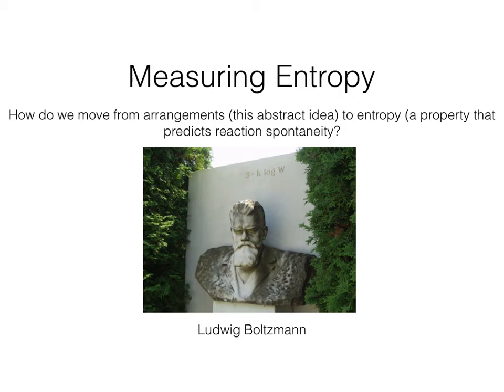Things with fewer orientations have less entropy. But how do we go from that concept of orientations to a property that predicts spontaneity?